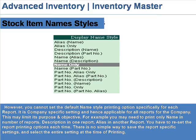However, you cannot set the default name style printing option specifically for each report. It is a company-specific setting and hence applicable for all reports of the company. This may limit its purpose and objective. For example, you may need to print only name in a number of reports, description in one report, alias in another report, and like that. You have to reset the report printing options each time. There is no simple way to save the report-specific settings and select the entire setting at the time of printing.